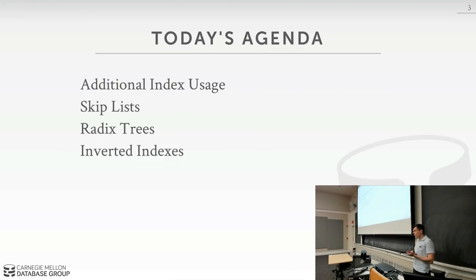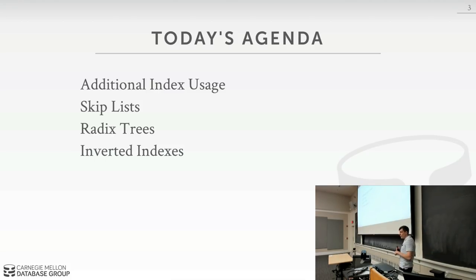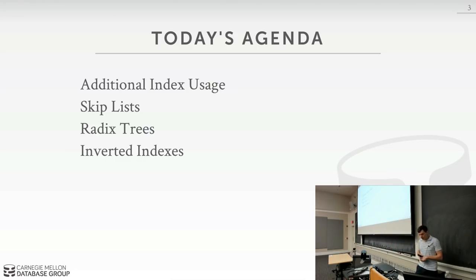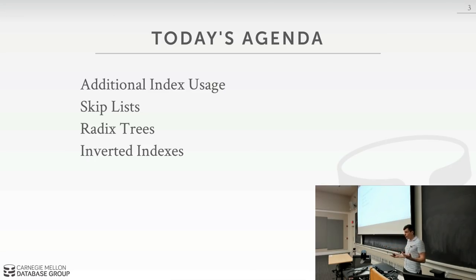Today's agenda is split into three parts. First, I want to talk about ways you can use table indexes in a database system that go beyond what we've mostly talked about so far. Then I want to talk about two alternative tree-based data structures for building a table index beyond a B plus tree. The B plus tree is still superior in some cases, but it's useful to be aware of them. We'll finish off talking about inverted indexes and how we do full-text search on these.